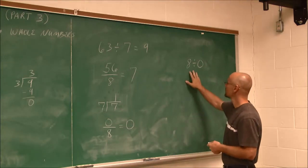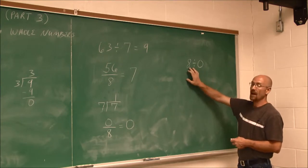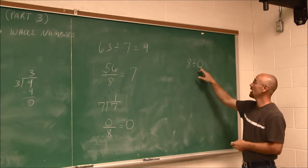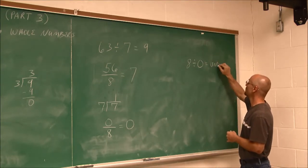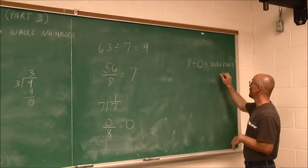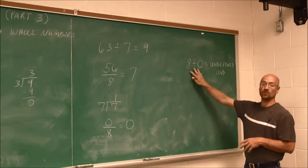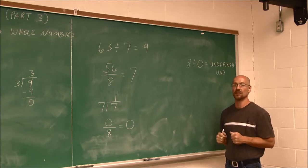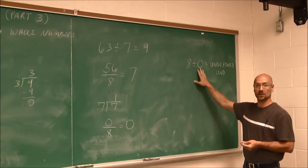Now let's look at this: 8 divided by 0. This is one of our properties of division. If I have eight items and I want to divide it so there are 0 parts, 8 divided by 0 is undefined — and we actually call that the answer: undefined. We cannot divide something by 0. You can never divide by 0. That is a property of division we have to commit to memory. Never divide by 0.